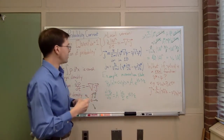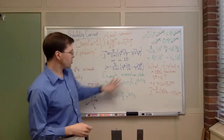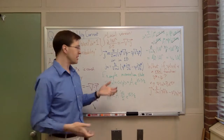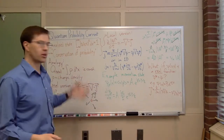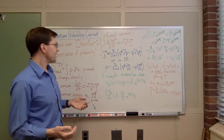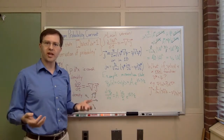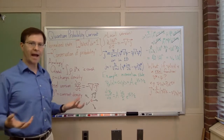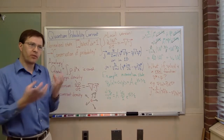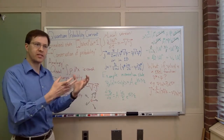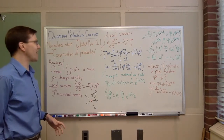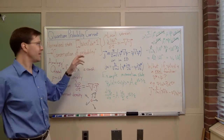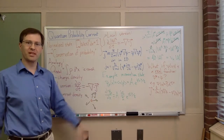Those are the two classic examples and the ones that come up most often in basic scattering problems. These are the examples of how probability current functions in quantum mechanics, and we'll use this eventually to talk about scattering, but for now it's sort of just an interesting idea. You can track how much the probability of the particle being here or there is shifting purely by looking at this probability current and seeing how it flows from place to place.